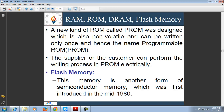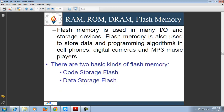In flash memory, the entire memory can be erased in a few seconds using electric erasing technology. Flash memory is used in many input-output and storage devices. It is also used to store data and programs in cell phones, digital cameras, and MP3 music players. There are two types of flash memories: code storage and data storage. Code storage flash, made by Intel and AMD, stores programming algorithms and is largely found in cell phones. Data storage flash, made by SanDisk and Toshiba, stores data and is found in digital cameras and MP3 players.